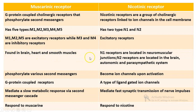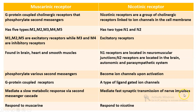Nicotinic receptors are found in the brain, heart, and smooth muscles. The N1 nicotinic receptors are located in the neuromuscular junction, and N2 receptors are located in the brain, autonomic, and parasympathetic system. Muscarinic receptors phosphorylate various second messengers, and nicotinic receptors become ion channels upon activation. Muscarinic receptors mediate a slow metabolic response via a second messenger cascade, while nicotinic receptors mediate fast synaptic transmission of nerve impulses. Muscarinic receptors respond to muscarine, and nicotinic receptors respond to nicotine.